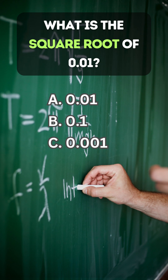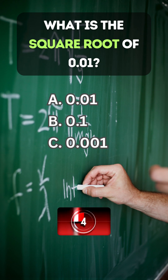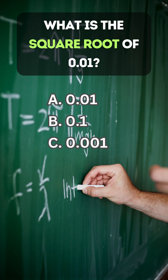What is the square root of 0.01? Answer B. 0.01.